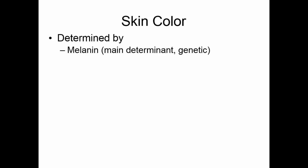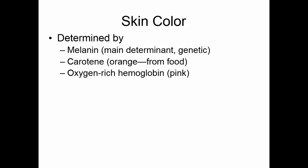Skin color is determined by three major things. Melanin is the primary determinant — the brown pigment made by melanocytes. Everyone has the same number of melanocytes, but they produce different levels of melanin, which is genetically controlled. Occasionally people will pick up an orange tint from carotene — the orange pigment in carrots and sweet potatoes. Babies especially, with their very thin skin, may look slightly orange if they eat a lot of orange vegetables. Then there is the blood supply in the dermis — oxygen-rich blood gives a pinkish tone to the skin.